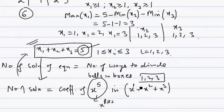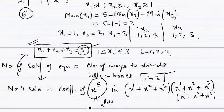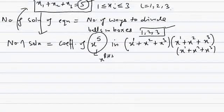x1 can take values 1, 2, 3, so we form the expression x + x² + x³ for x1. Similarly, x2 can take the same values 1, 2, 3, so we form a similar bracket for x2. The same applies for x3. So the expansion is (x + x² + x³)³, and we find the coefficient of x⁵ in this product of all three brackets.